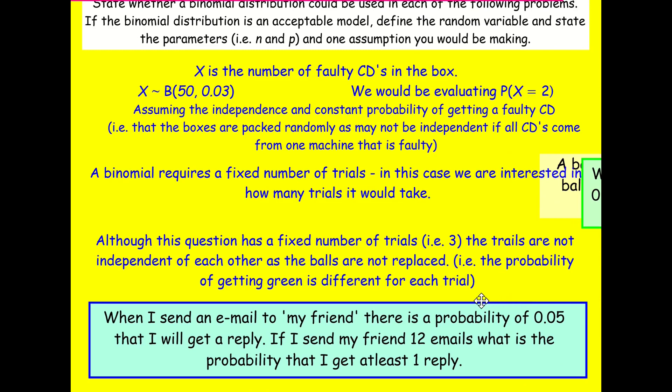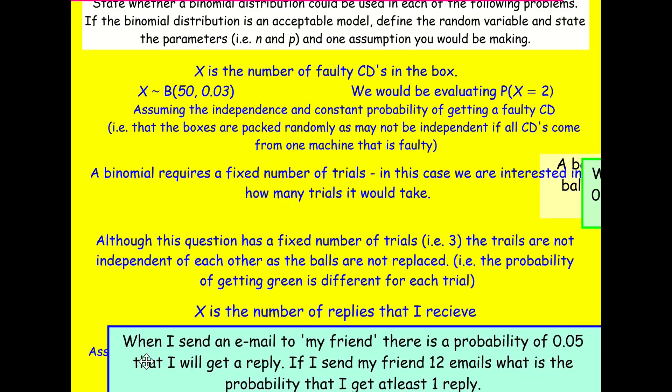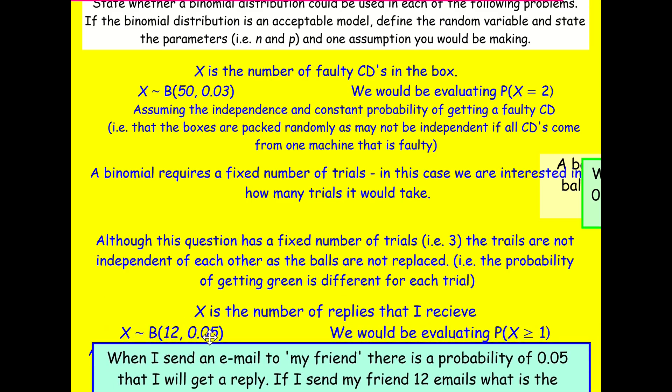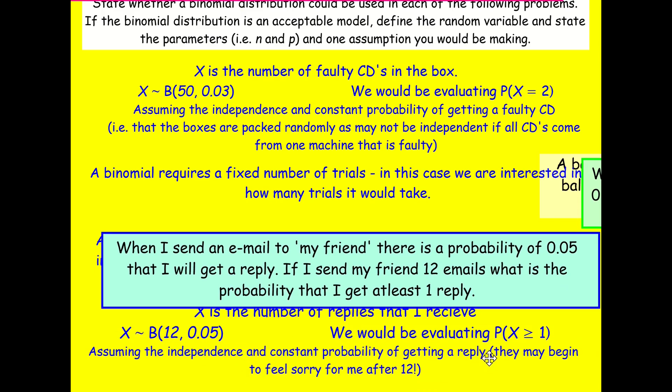And then when I send an email to my friend, there's a probability of 0.05 that I'll get a reply. If I send my friend 12 emails, what is the probability that I get at least one reply? So potentially this could be modeled as a binomial distribution where X is the number of replies that I receive. X follows a binomial distribution with 12 trials, 0.05 chance of success. And we'd be trying to find out the probability that X is greater or equal to one. We're assuming independence and a constant probability of getting a reply. However, if we start sending loads of emails, then they might start feeling sorry for us, so it might not be independent. So these are just different cases to make you think about whether a binomial distribution is valid or not.